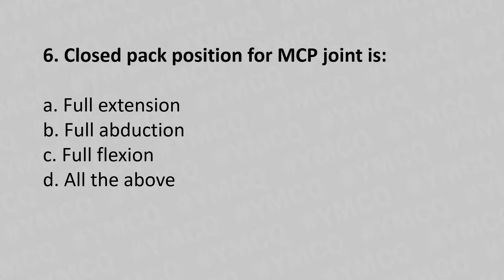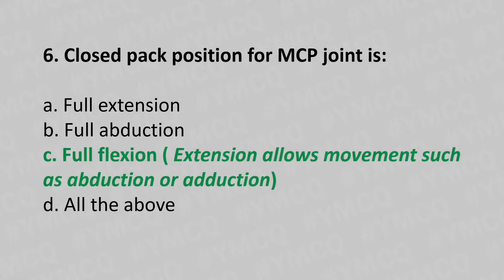Sixth question: the close-packed position of the MCP joint (metacarpophalangeal joint) is — option A: full extension, option B: full abduction, option C: full flexion, option D: all of the above. The answer is option C: full flexion, which restricts movement such as abduction or adduction.